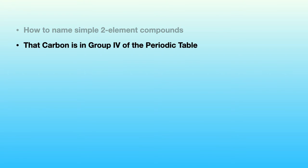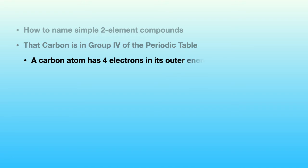You should also know that carbon is in group 4 of the periodic table. Now, on some periodic tables these days, that's called group 14. But as I'm old-fashioned, I'm going to stick to group 4. This means that there are four electrons in the outer energy level of a carbon atom.